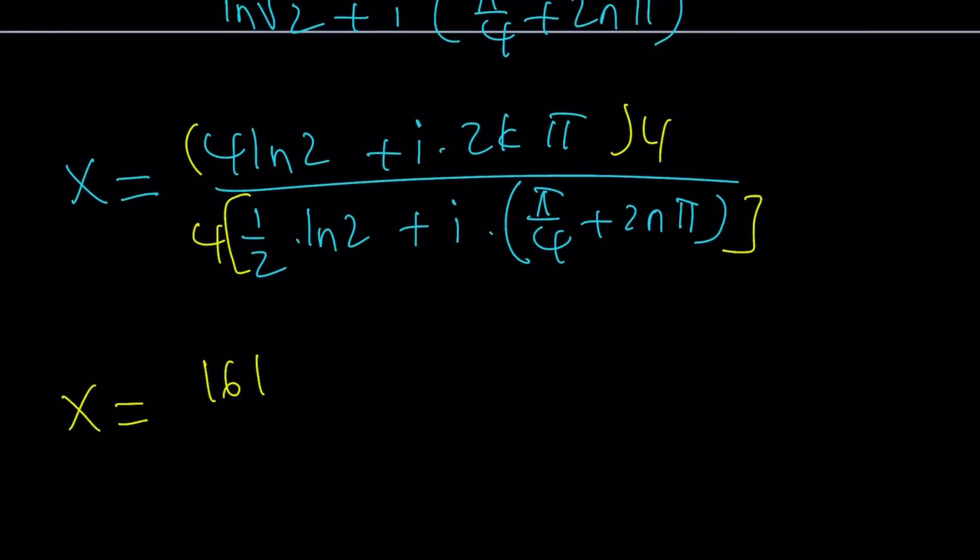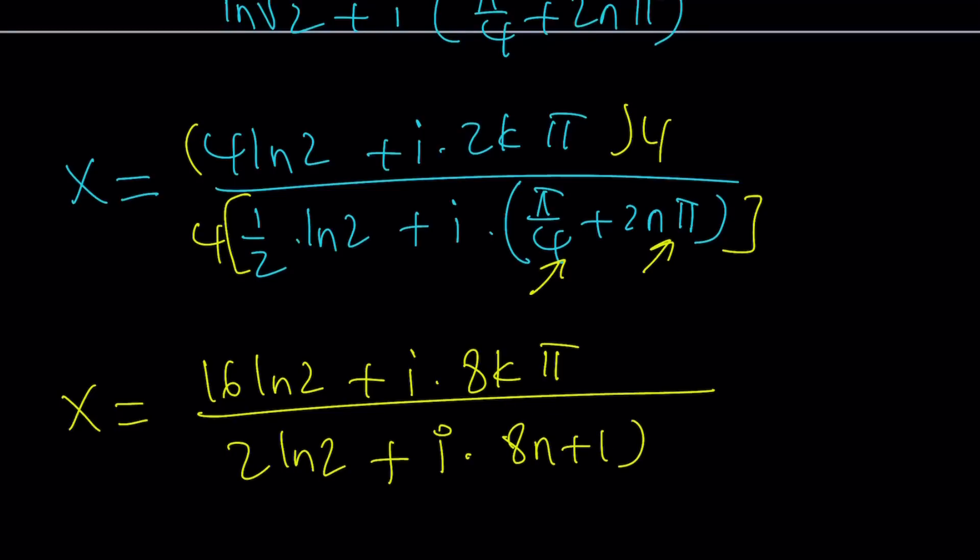This is going to give me (16 ln 2 + i·8kπ) divided by (2 ln 2 + i(π/4 + 2nπ)). Now that 4 is going to be distributed here and here. 4 times π/4 is going to be π. And this is going to be 8nπ. So I can write it as (8n + 1)π.